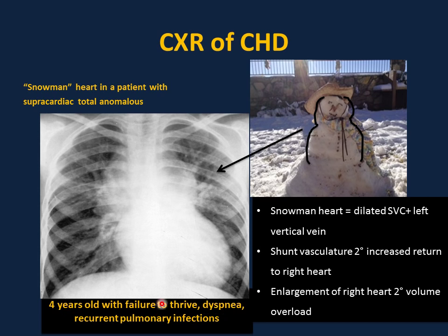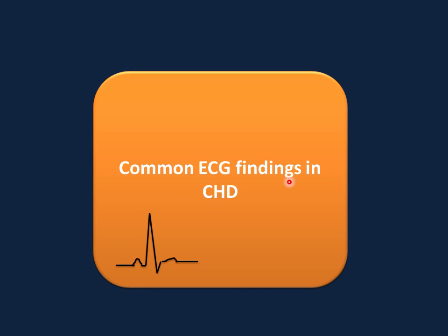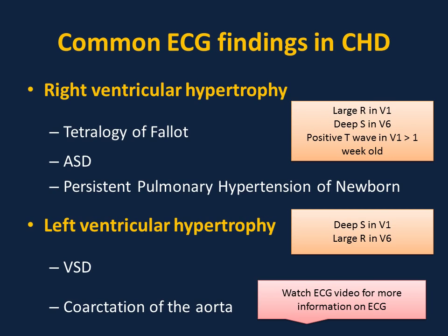This is a four-year-old with failure to thrive, dyspnea, and recurrent pulmonary infections. The mediastinum here is wide, giving the characteristic snowman appearance. This is the classic x-ray of total anomalous pulmonary venous return (TAPVR). Because of the wide mediastinum at the top from the extracardiac shunt — the pulmonary veins, instead of draining to the left atrium, drain to the right side through the left vertical vein, innominate vein, and superior vena cava — giving the snowman appearance. This is the supracardiac type.